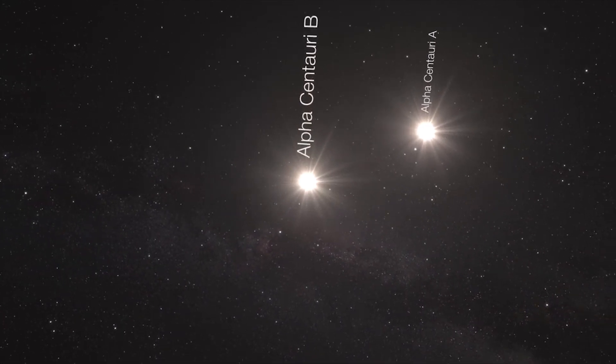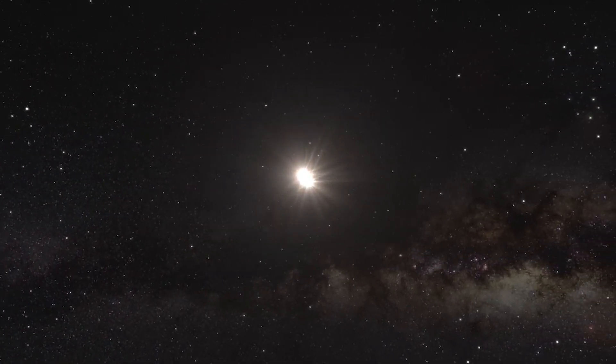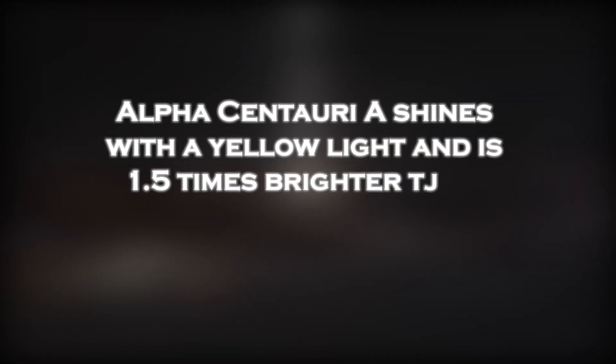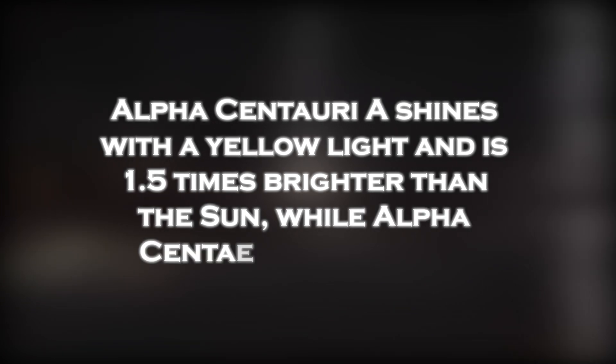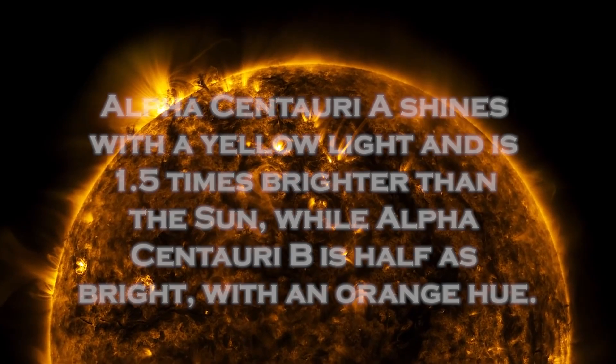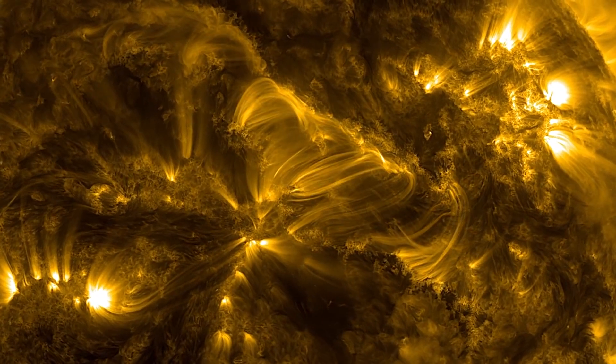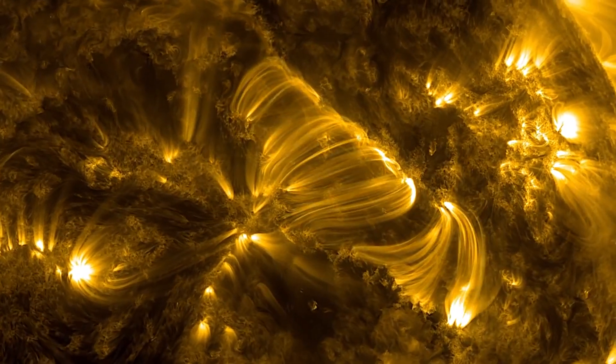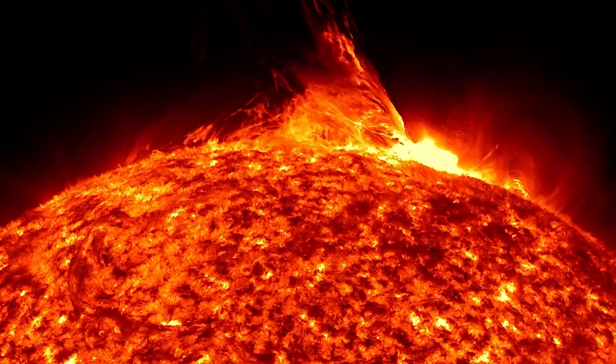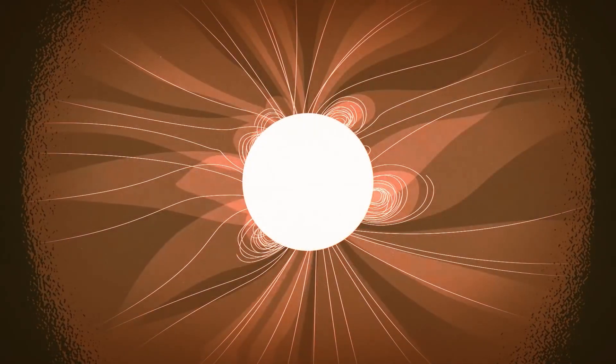Alpha Centauri A and B, the two stellar companions, are relatively close to each other and are quite similar to the Sun. Alpha Centauri A shines with a yellow light and is 1.5 times brighter than the Sun, while Alpha Centauri B is half as bright with an orange hue. Alpha Centauri A is slightly larger than our Sun. Alpha Centauri B is also smaller, so our Sun fits exactly between them in size. But where did the signal between these two stars come from?